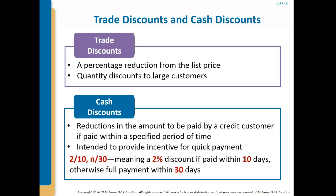A cash discount provides an incentive for quick payment. Terms like '2/10, net 30' mean a 2% discount if paid within 10 days; otherwise full payment is due in 30 days. Cash discounts are variable consideration because there is uncertainty about whether a customer will pay quickly enough to qualify. Sellers use two methods in practice: the gross method and the net method. With both methods, sales revenue ends up reduced by only those discounts actually taken.